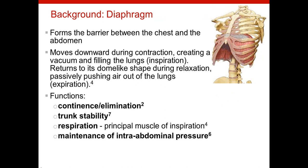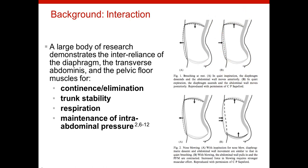The diaphragm is a dome-shaped muscle that forms the barrier between the chest and abdomen. When it contracts, it moves downward to create a vacuum that helps the lungs fill with air. It returns to its dome-like shape passively, contributing to exhalation in the process. It also plays a role in continence and elimination, trunk stability, respiration, and maintenance of intra-abdominal pressure. As you can see, the diaphragm, transverse abdominus, and pelvic floor muscles work together to carry out these shared functions. The pictures at the right illustrate how these muscles work together during breathing, at rest, and nose blowing.